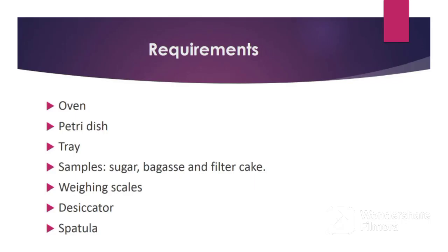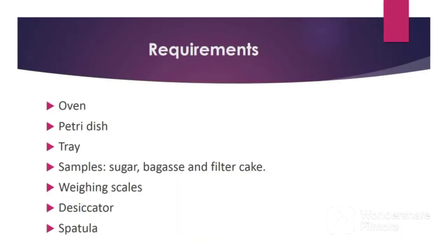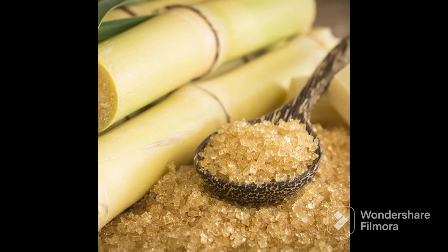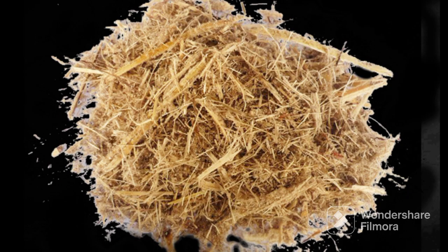The second requirement is a petri dish, whose function is to hold the sugar sample. Next we have a tray; the function of the tray is to hold bagasse or filter cake. The first sample is sugar, which is the final product after cane processing, picked at the horizontal bucket elevator after drying in the rotary dryer. Moisture content is one of the sugar quality parameters, hence this analysis is one of the key analyses.